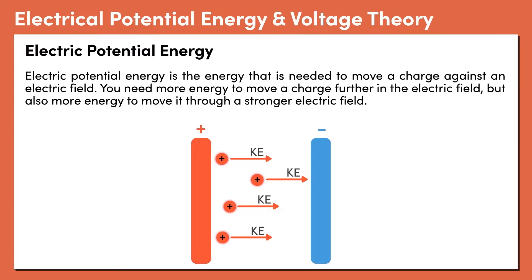If you pull the positive particle further away from the plate, you would have to use more energy, so the charge would have more electrical potential energy stored in it. If you doubled the charge on the plate, you would need more energy to move the positive particle. If we doubled the charge on the positive particle, you would need more energy to move it.